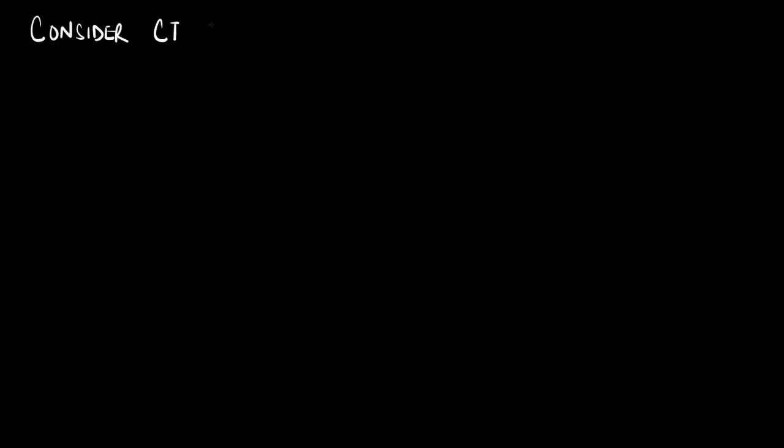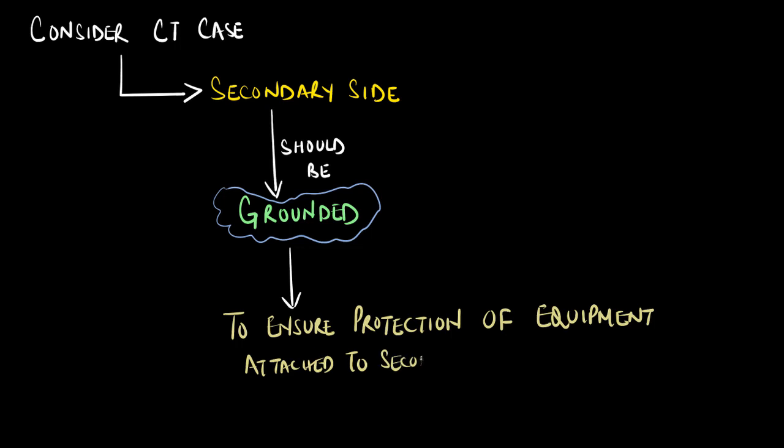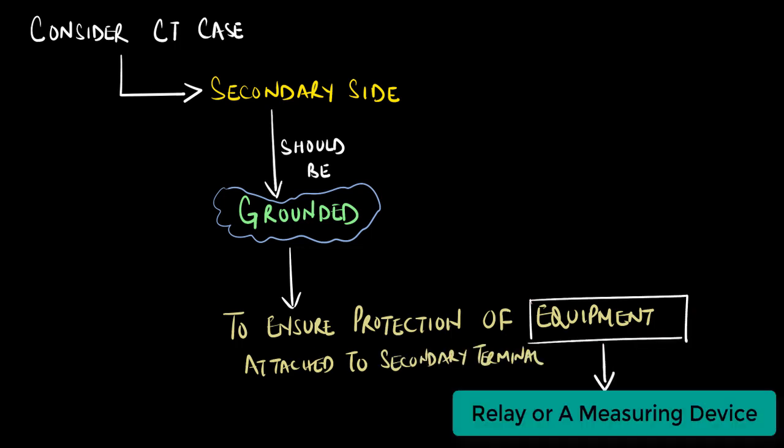If we consider the case of a current transformer, then it is necessary to ground the secondary side in order to ensure protection of the equipment attached to the secondary terminal. The equipment could be a relay or a measuring device.